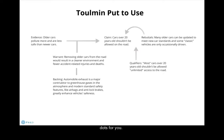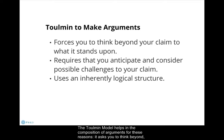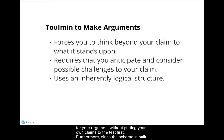The Tullman model helps in the composition of arguments for these reasons. It asks you to think beyond, above, below, and against your own argument — that is, you cannot have completely employed the Tullman model without putting your own claims to the test first. Furthermore, since the scheme is built upon an inherently logical structure of rational questioning, you can be sure that your argument uses reason, if sometimes even to analyze irrational situations.